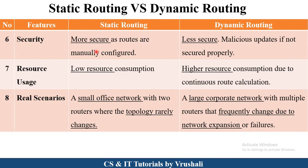In real scenarios, static routing is generally used in small office networks — for example, in a local area network where the network topology rarely changes. Suppose a star topology is used in a particular office; that topology is permanent, so static routing is used. But in large corporate networks, network topologies frequently change due to expansion purposes, so dynamic routing is used.